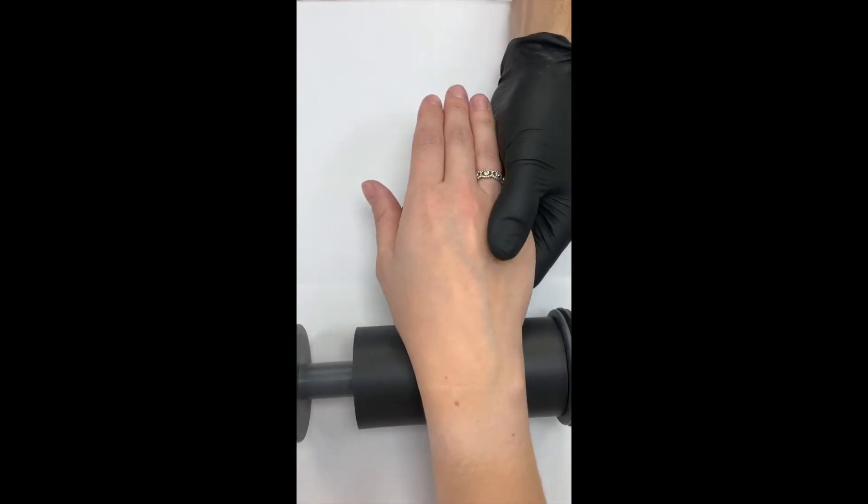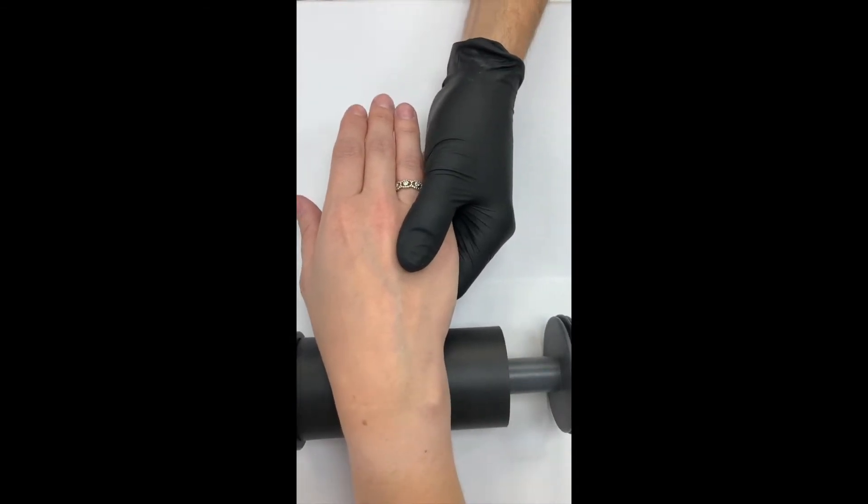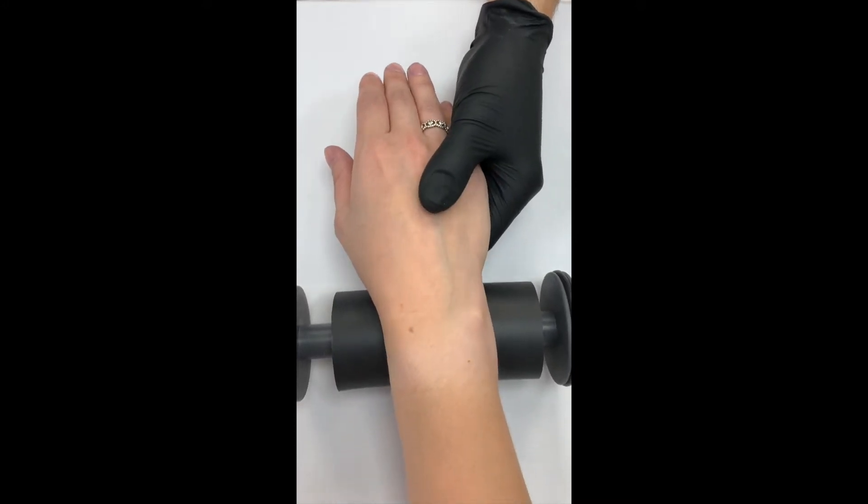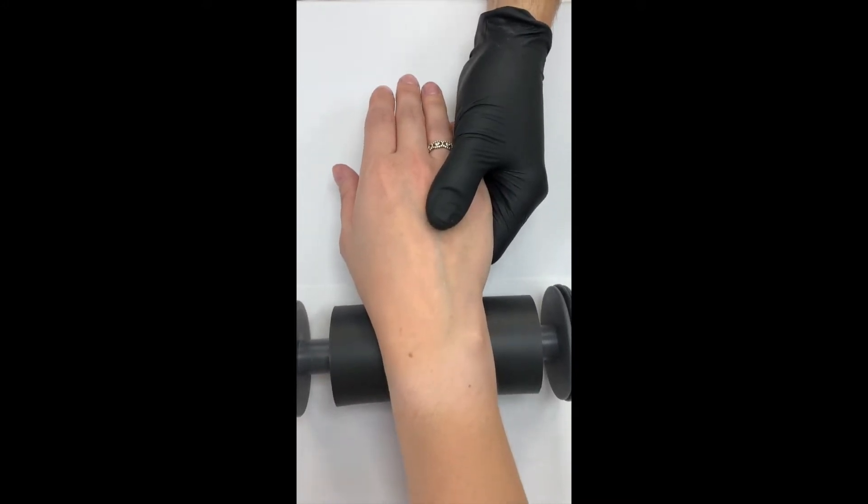The wrist assist glides side to side so you can have them in the correct position for you. The wrist assist is really comfortable on your client's hands underneath.